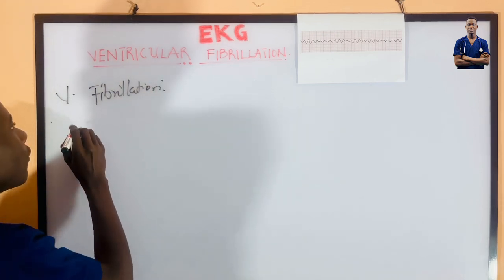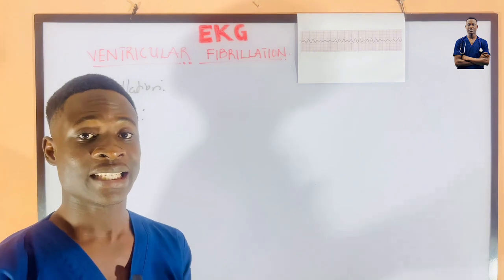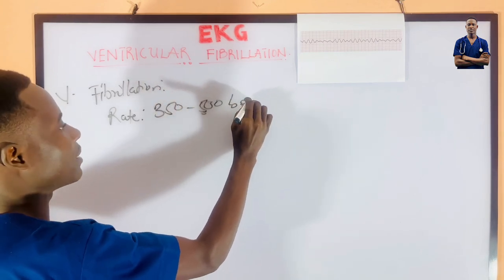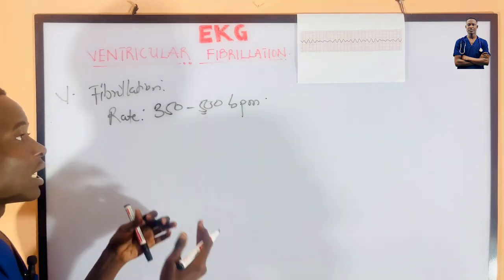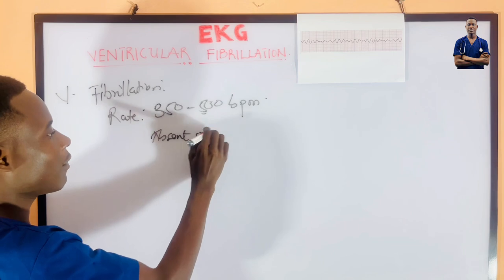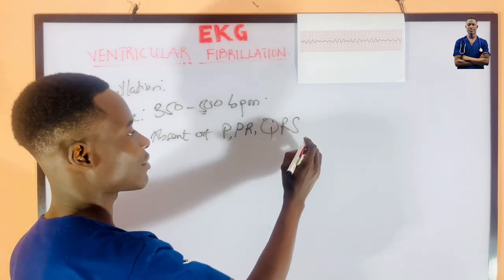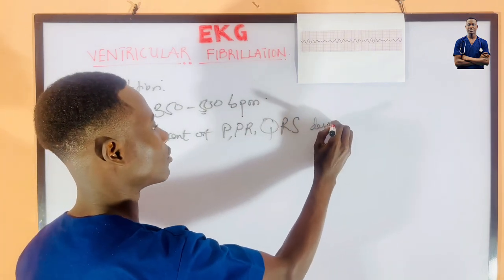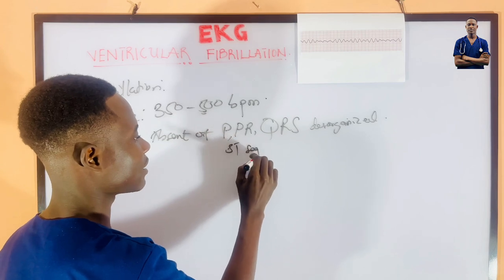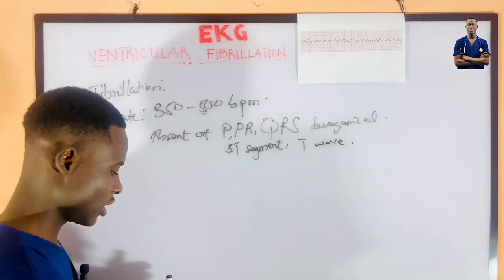For V-Fib, the rate is very high — rapid — ranging from 350 to 500 beats per minute. Looking at the waves we can see in this condition: there is an absence of P wave and PR interval, the QRS complex is disorganized, there is an absence of ST segment, and an absence of a T wave.